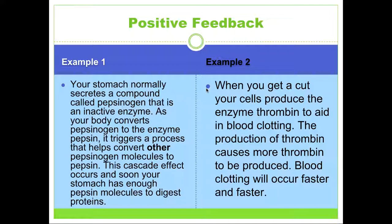Example two: when you get a cut, your cells produce an enzyme called thrombin to help with blood clotting. The production of thrombin causes more and more thrombin to be produced. This is helpful because our blood clots faster and faster. We don't want to wait for enough thrombin to be produced slowly — we want it as quickly as possible to seal the body so we don't bleed out.